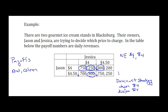Whenever you're in a situation where players have dominant strategies — each one has a dominant strategy — then you're going to find the Nash Equilibrium where those two dominant strategies meet. In this case, that gives us $750 and $250, which is the same result we found above.